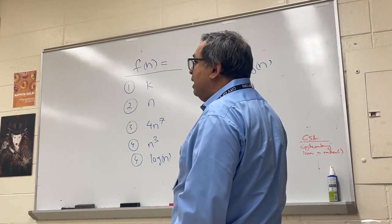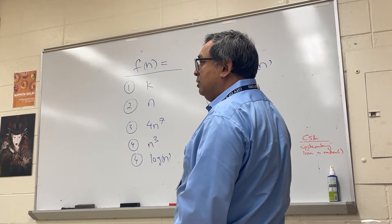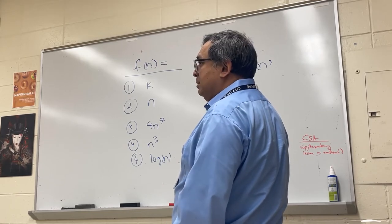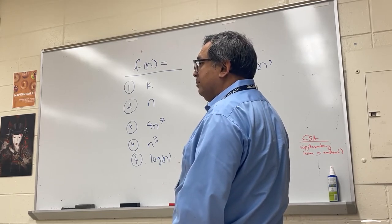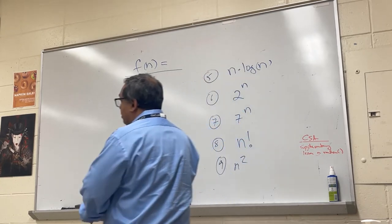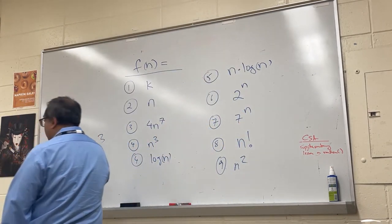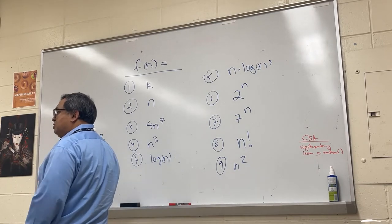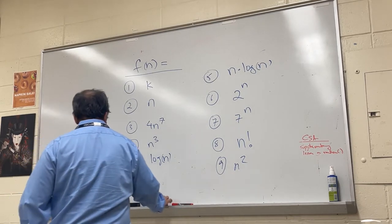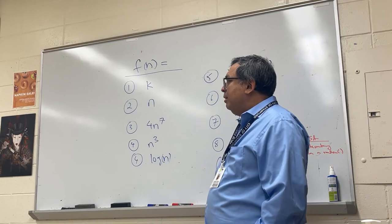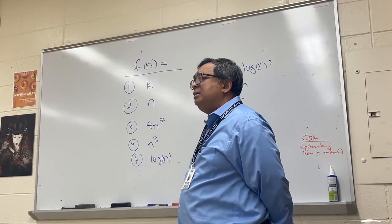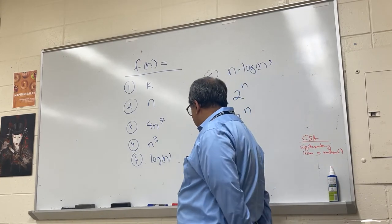What is k? K is a constant. Here, let me give you an example. F of n equals three. That's like a constant function.